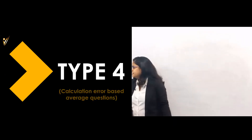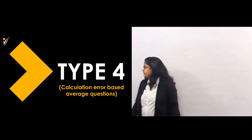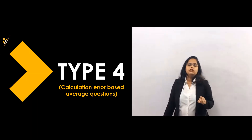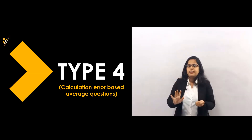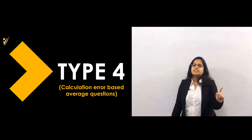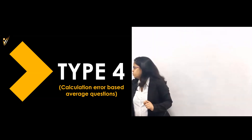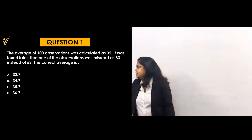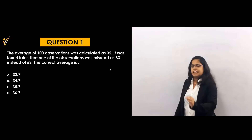One note: when five numbers are given randomly, the middle one is the mean only if they are consecutive numbers — otherwise it is not the average. Now for type 4, the question: the average of 100 observations was calculated as 35.